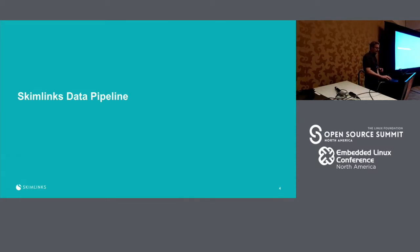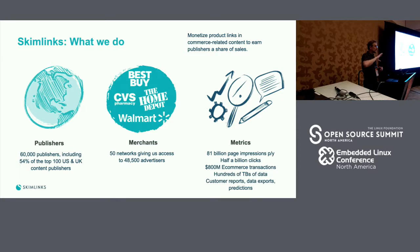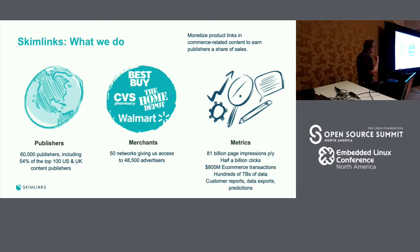At Skimlinks we monetize product links in commerce-related content to earn publishers a share of sales. I like to call it a better version of advertising because we don't show any display advertising on the website. We give publishers a snippet of JavaScript code — they include it in their website, and that code scans all links to external merchants such as Amazon and eBay and turns them into affiliate links. If the end user clicks one of those links and buys the product, we give a percentage share of that purchase to the publisher. It's completely invisible from the user's point of view.